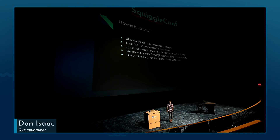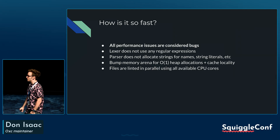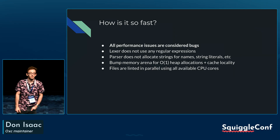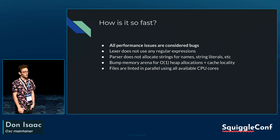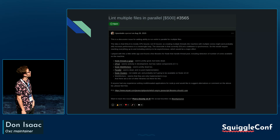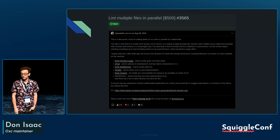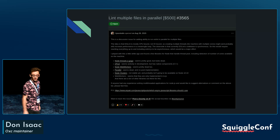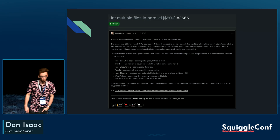For the linter specifically, we multi-thread. If you have 10 cores on your M1 Mac, we use every single one of your cores. By the way, if you're interested in adding multi-threading to ESLint, you could earn yourself a cool $500 — it's been open for a while. It seems feasible, so if you're interested, you could earn some money.